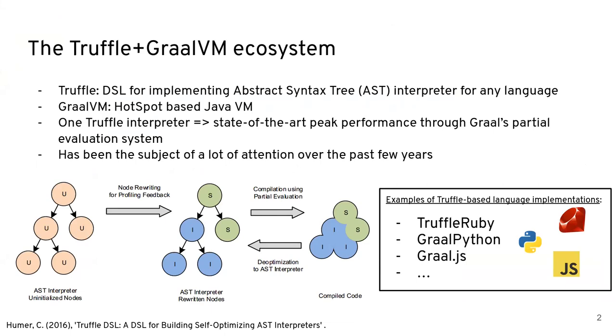So the idea is that we implement one Truffle interpreter, and through Graal's partial evaluation system, you get just-in-time compilation that yields peak performance that's pretty much state-of-the-art, as we'll see in a bit.